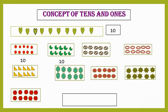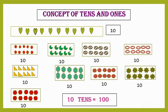1 ten, 2 tens, 3 tens, 4 tens, 5 tens, 6 tens, 7 tens, 8 tens, 9 tens and 10 tens. So 10 tens is equal to 100.